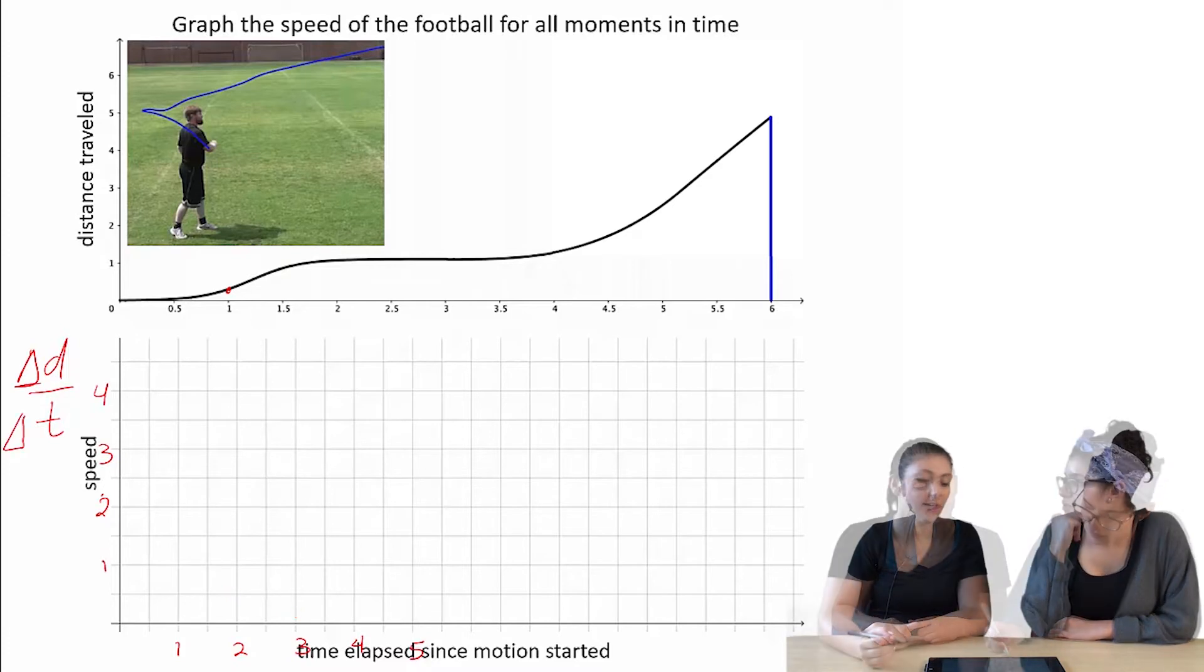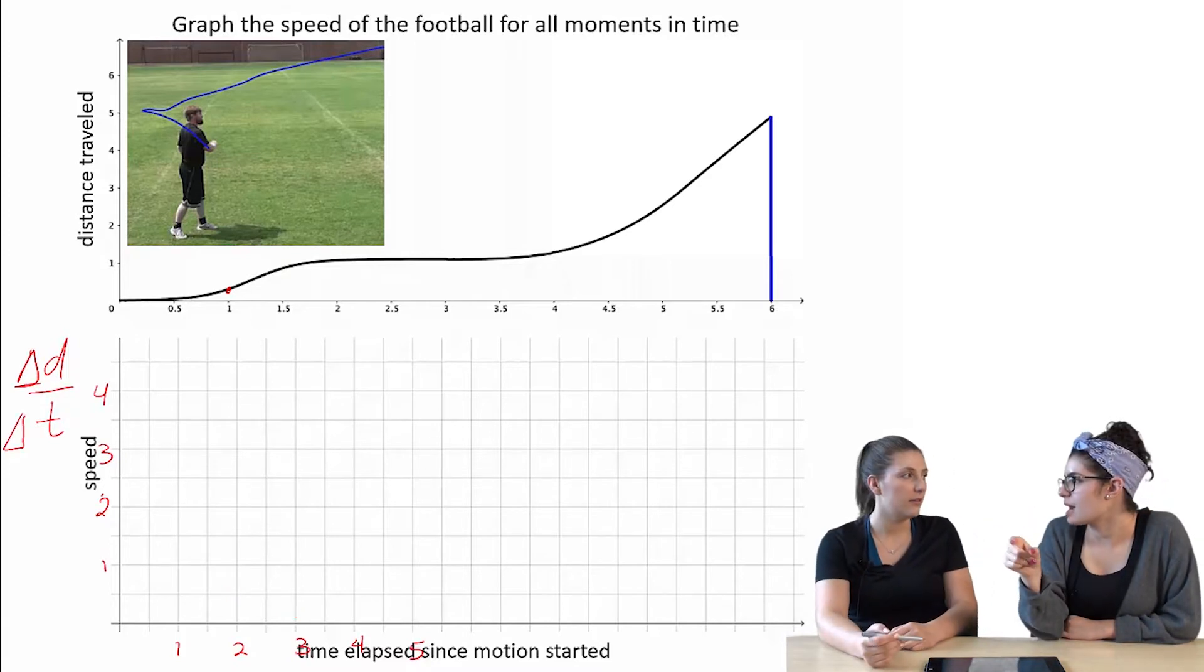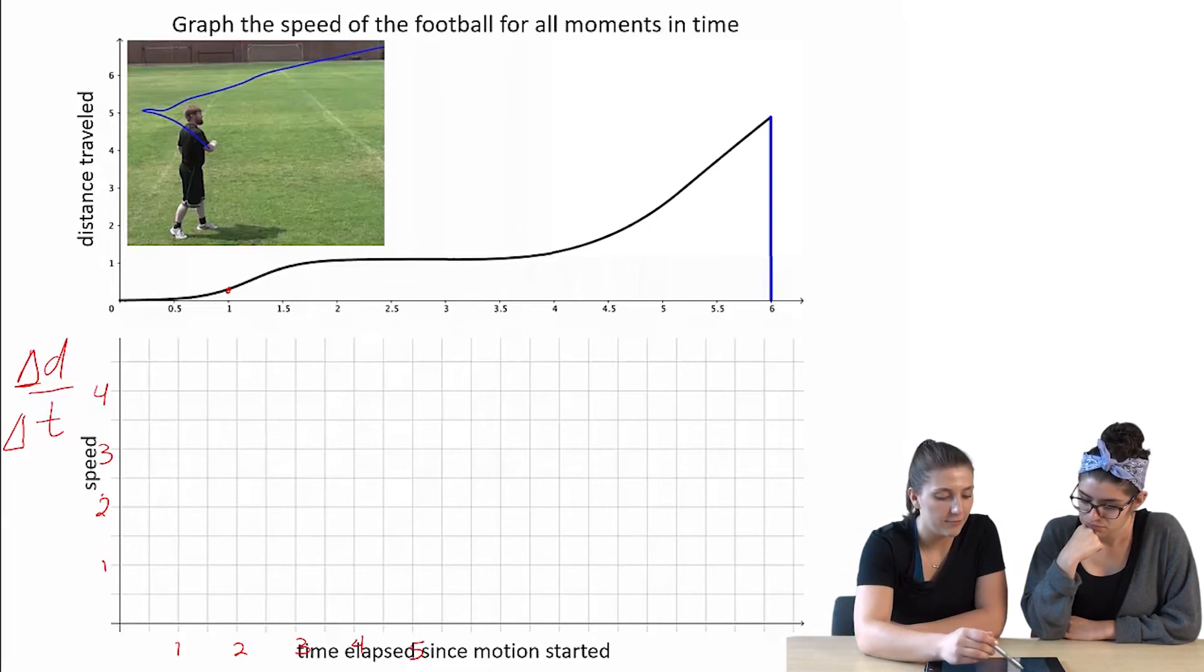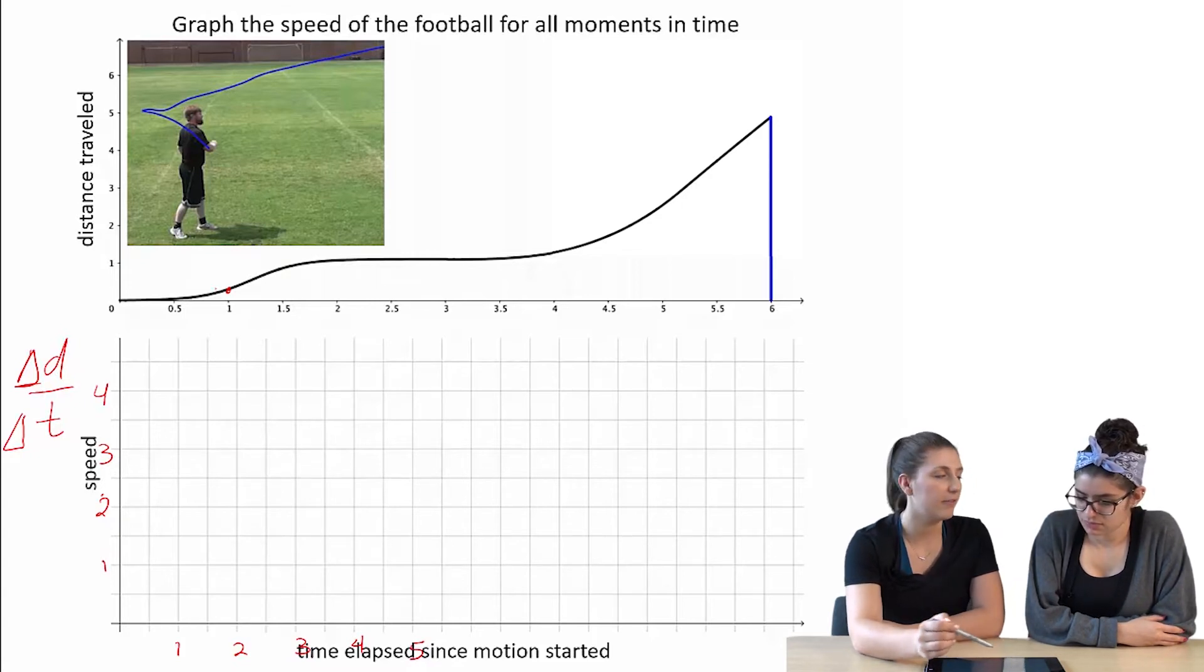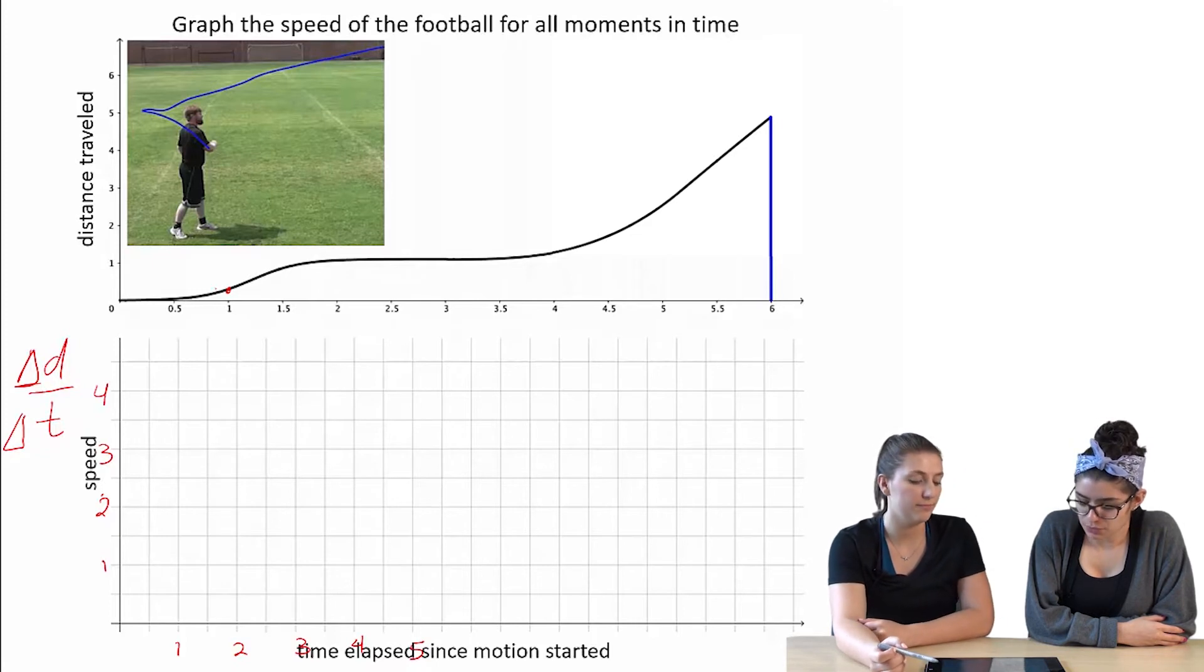Okay. So for delta t, we just want a small time interval? Yeah. Okay. So maybe if we did, like, 0.9 to 1.1. That's hard to see, though. Do you think it's too big if we do 0.5 to 1.5?